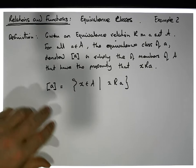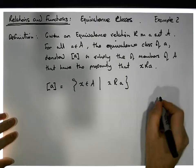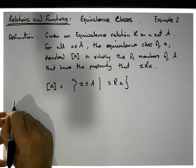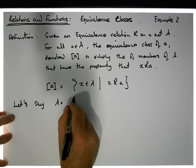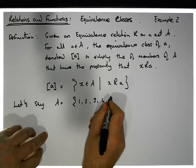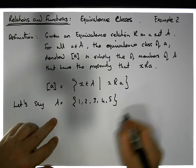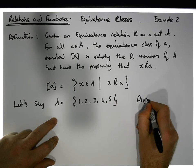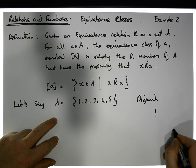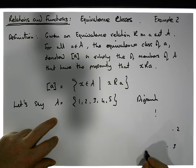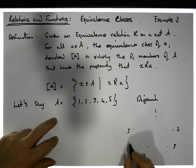So let's have a look at an example. Let's have a look at a quick example. So let's say that A is the set that contains the values 1, 2, 3, 4 and 5. Let's look at the digraph associated with this. So let's look at the digraph. Let's say we have 1, we have 2, we have 3, we have 4 and we have 5.